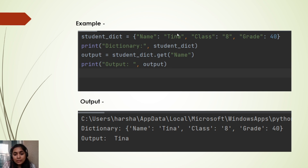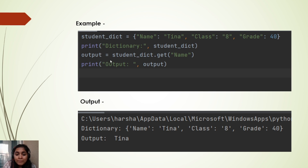Using the same student dictionary example, let's say we want to extract the value of the key name. We write student_dictionary.get('name'). In the output we can see that we are getting the value of the key name, which is Tina.